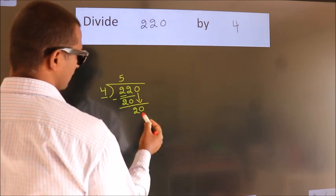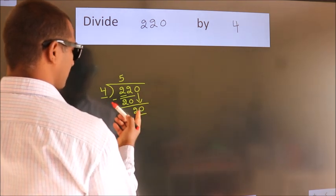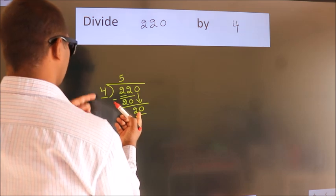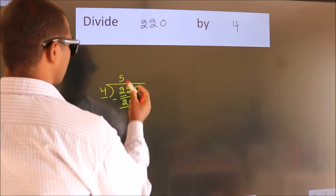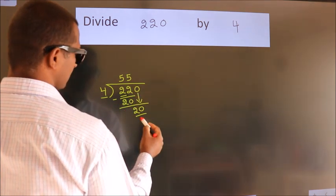We get 2. After this, bring down the beside number, so 0 down. So 20. When do we get 20? In the 4 table, 4 fives 20.